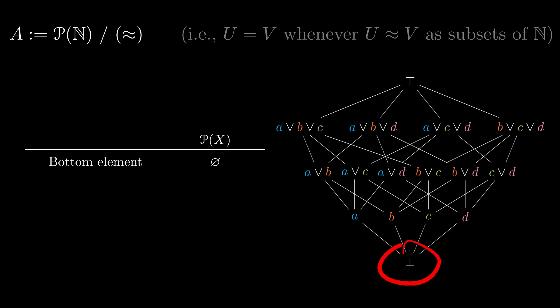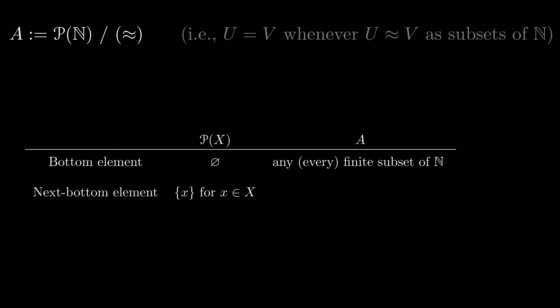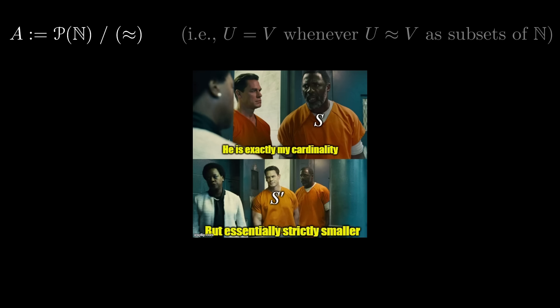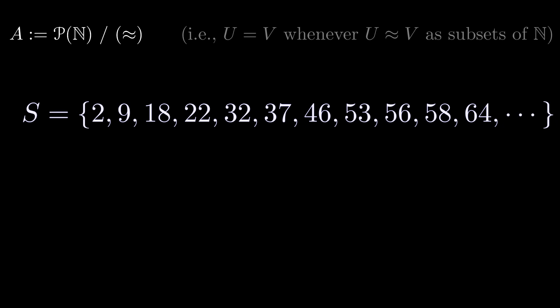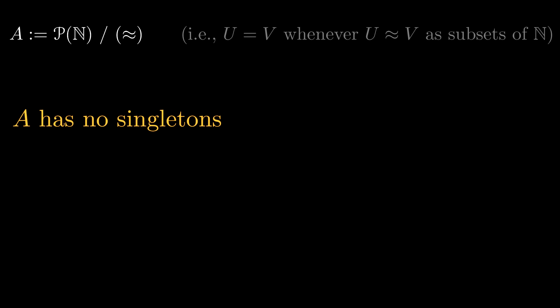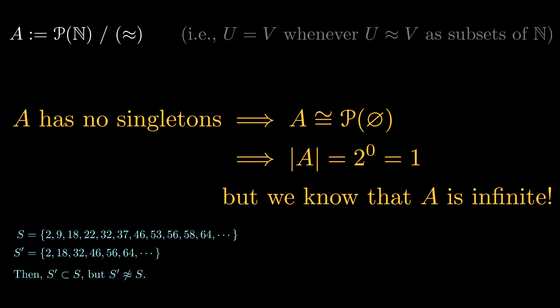Since every finite set is essentially the same as the empty set, they all correspond to the same element in A. This means that any second smallest element of A would have to correspond to an infinite subset of n. The problem with this is that every infinite subset of n is strictly larger than another infinite subset of n. What you do is you take an infinite set, sort its elements in increasing order, and remove every second element. The remaining set still has infinitely many elements, but it's also not essentially the same as the original. Since the resulting subset is also infinite, we can repeat this process indefinitely. In other words, A doesn't have any singletons. But this is only possible if A is the power set of the empty set. But this is also false. The power set of the empty set has one element, but the same argument as above shows that A has infinitely many distinct elements. This therefore proves that A cannot be isomorphic to the power set of anything.